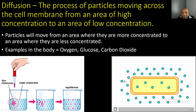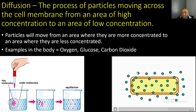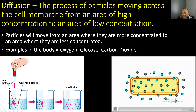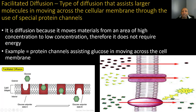Here's another example — these molecules represent oxygen molecules on the outside of the cell membrane. We have a higher concentration of oxygen on the outside and a lower concentration on the inside. Watching the process of diffusion, those oxygen molecules diffuse across the cell membrane until they establish equilibrium, going from an area of high concentration to an area of low concentration.